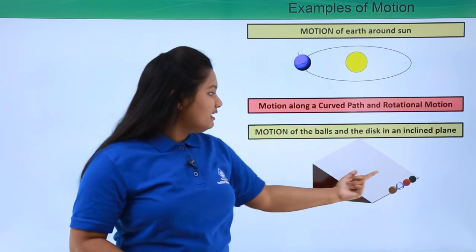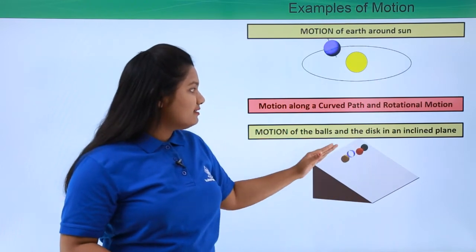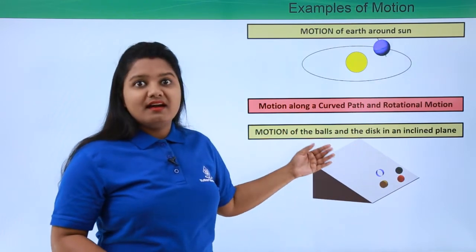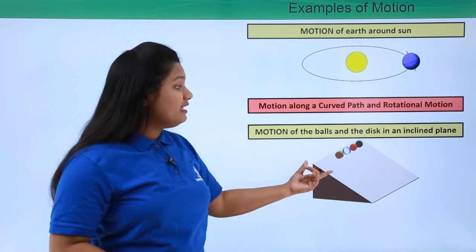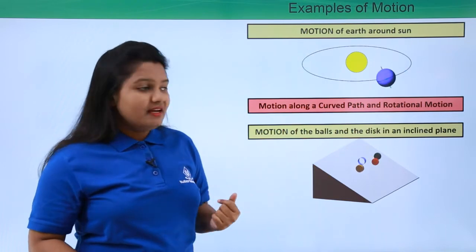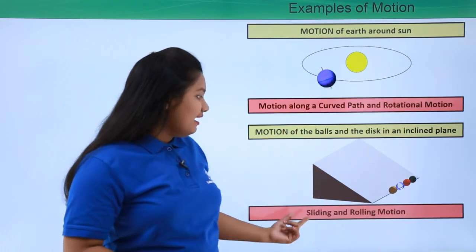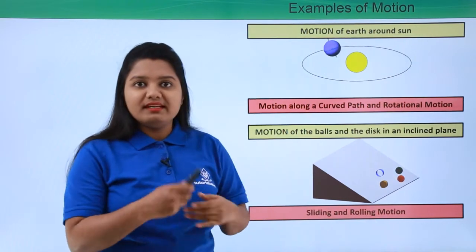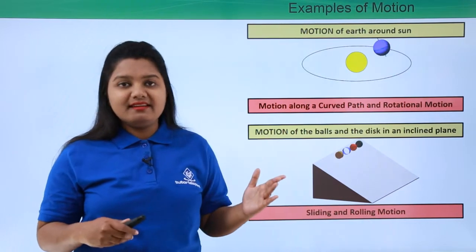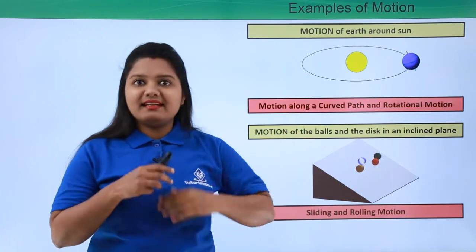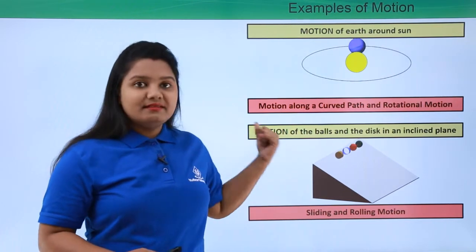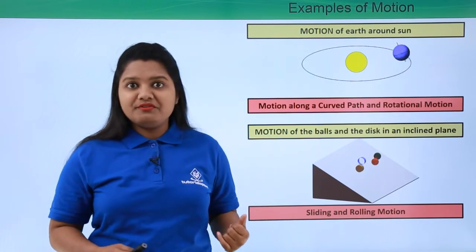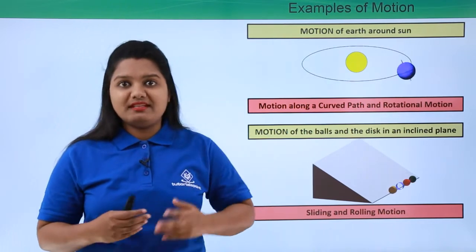The motion of these balls and discs in this elliptical plane are also a combination of two kinds of motion, that is sliding and rolling. Now these discs and balls are rolling and also they are sliding down the plane at the same time.